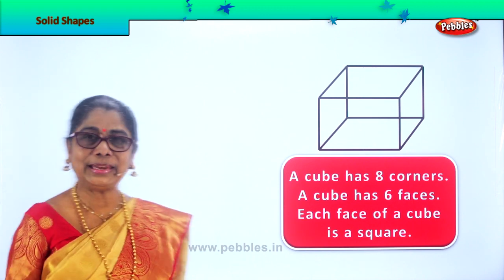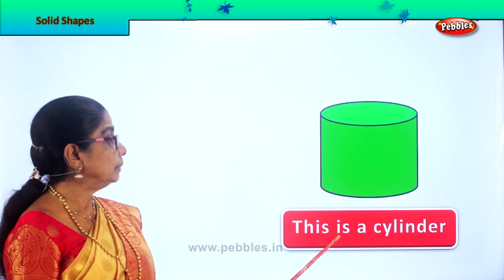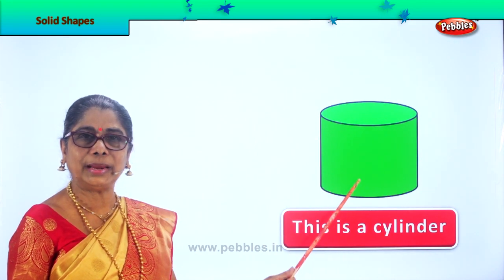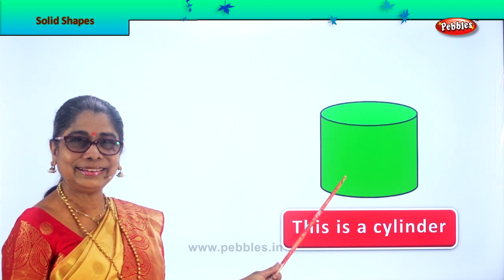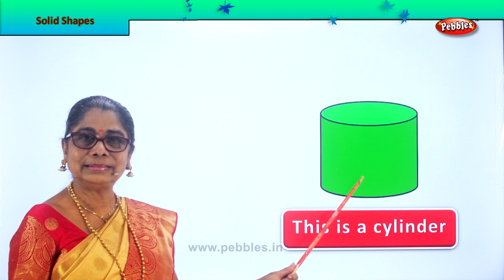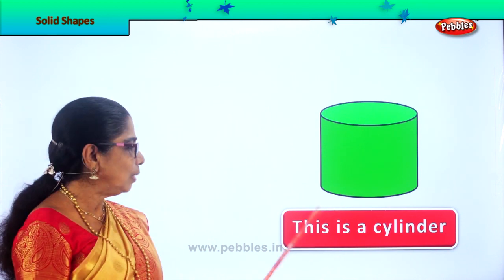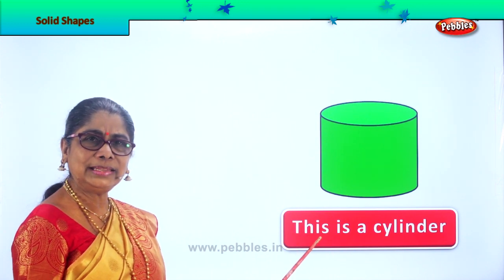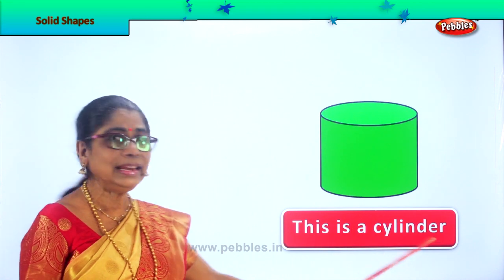Next, shall we take another solid shape? Where do you see this shape? Yes, the gas cylinders. Good. Mummy has nice silver boxes like this. Cylinder. What is this? Read this with me. This is a cylinder.